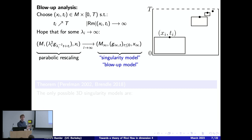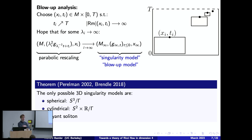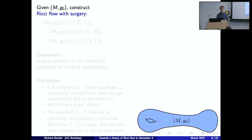The upshot is that this blow-up construction reduces the study of singularity formation to the classification of possible singularity models. Perelman carried this out in his famous paper, showing that the only possible 3D singularity models for Ricci flow in dimension three are the sphere, the cylinder S² × ℝ, and the Bryant soliton. There was additional work by Brendle that characterized the Bryant soliton precisely. So near a very singular point, the local geometry looks either spherical, cylindrical, or Bryant-soliton-like.